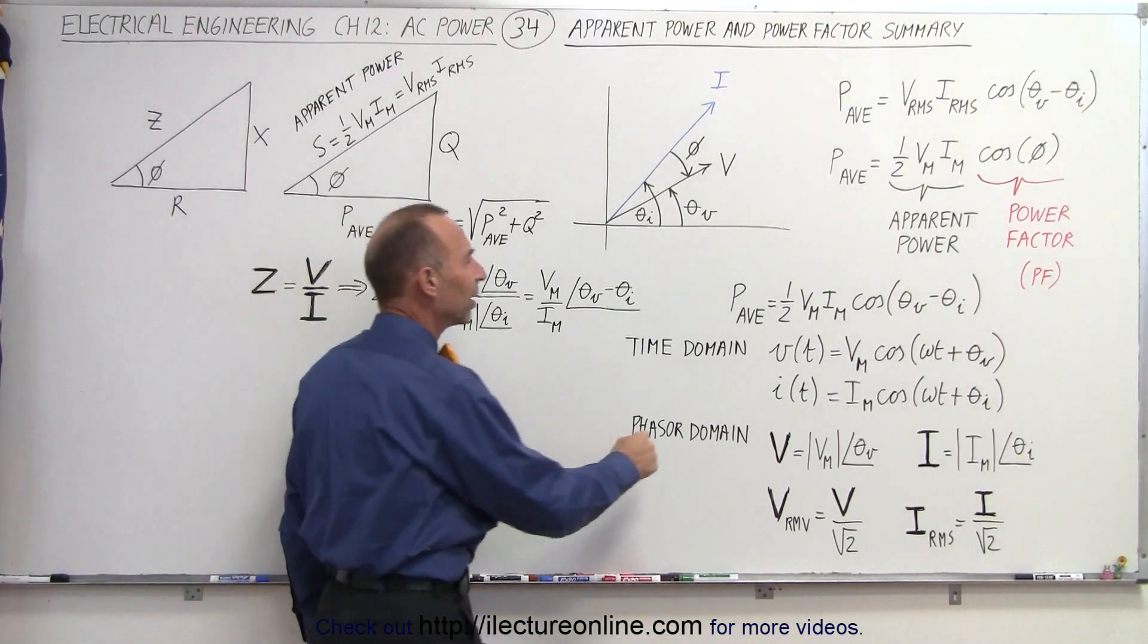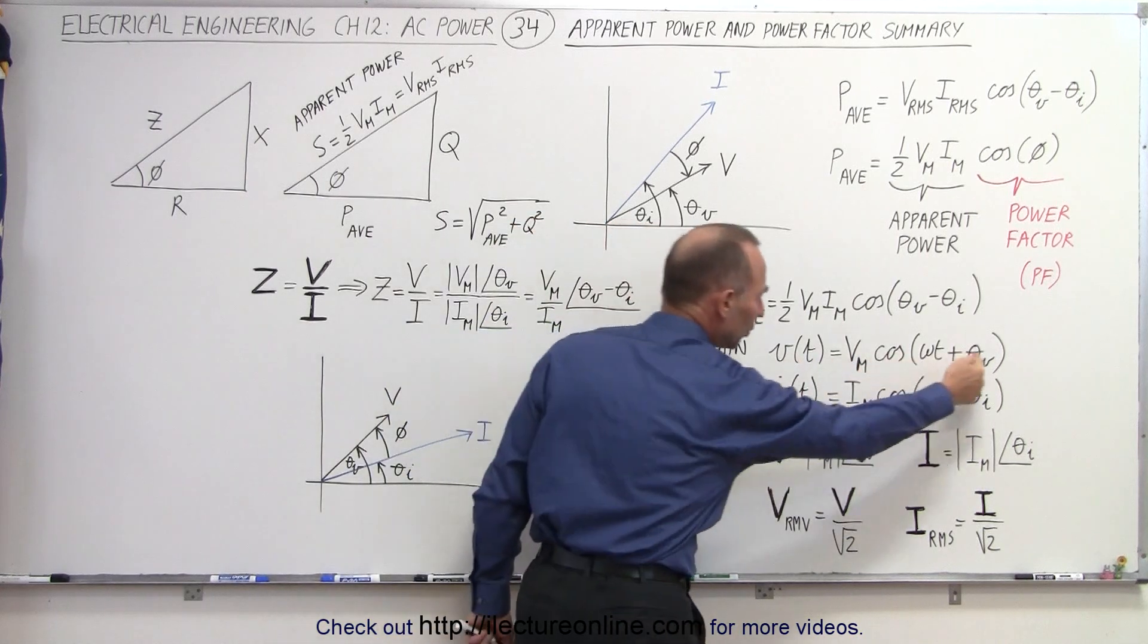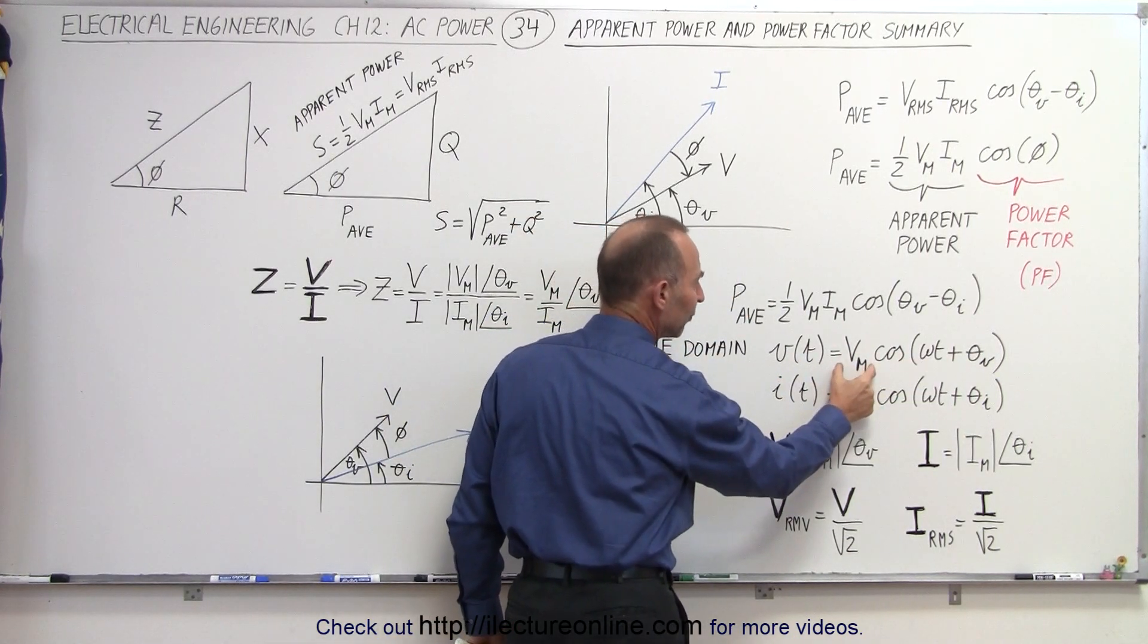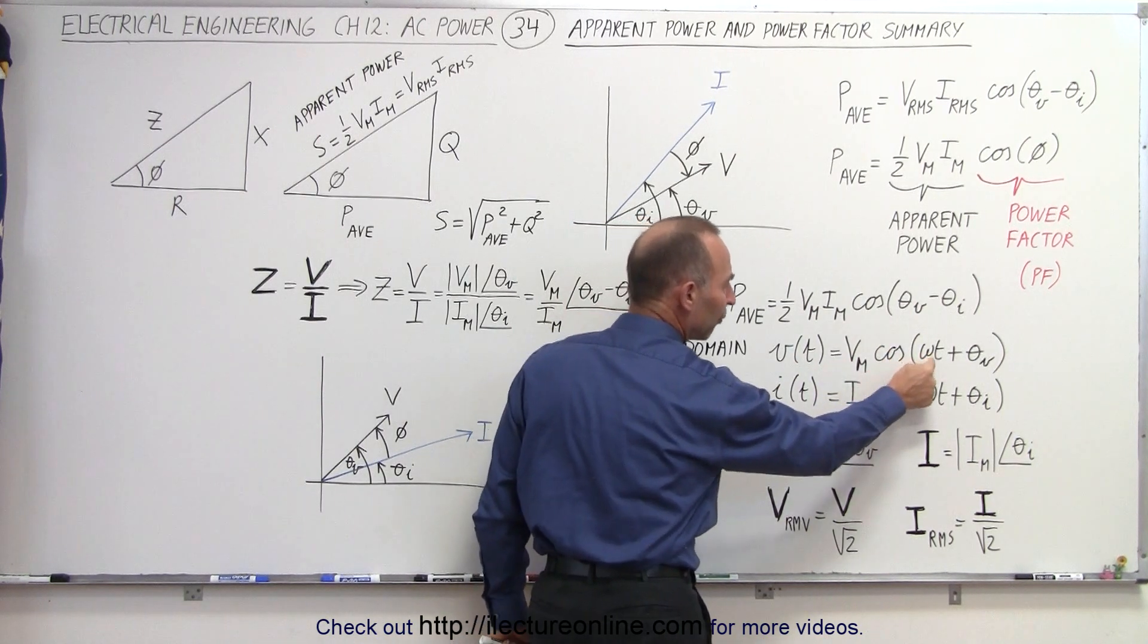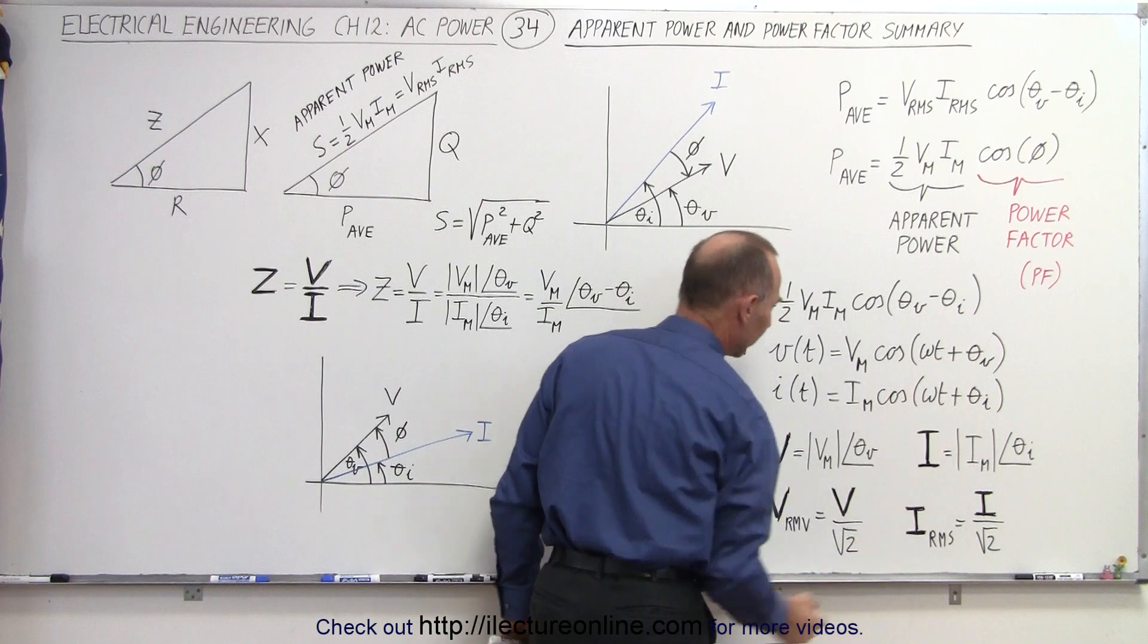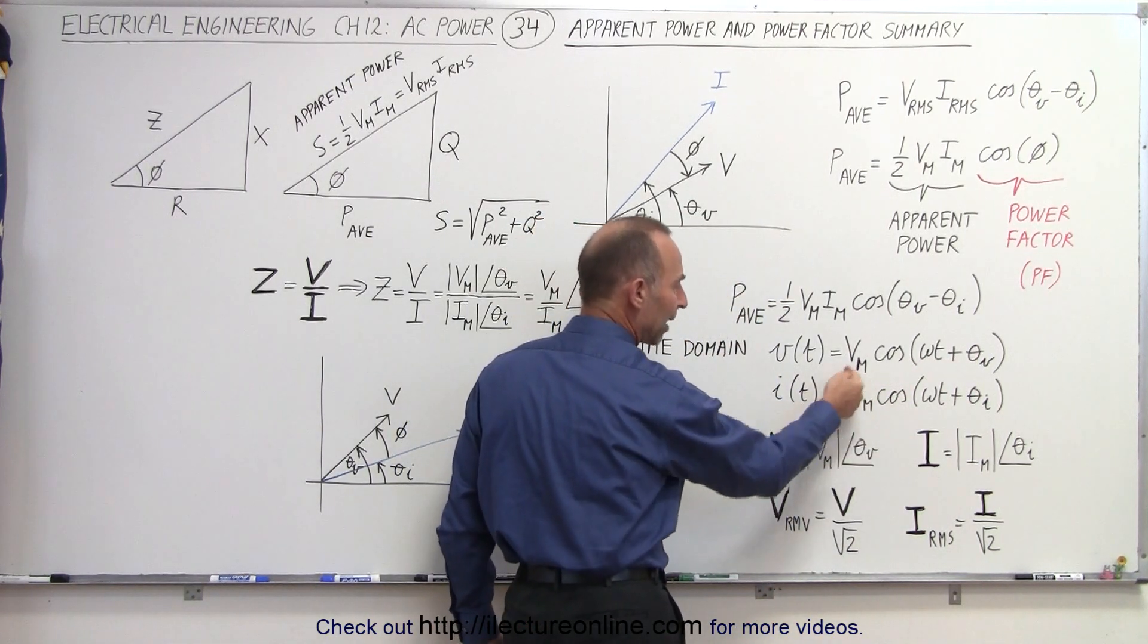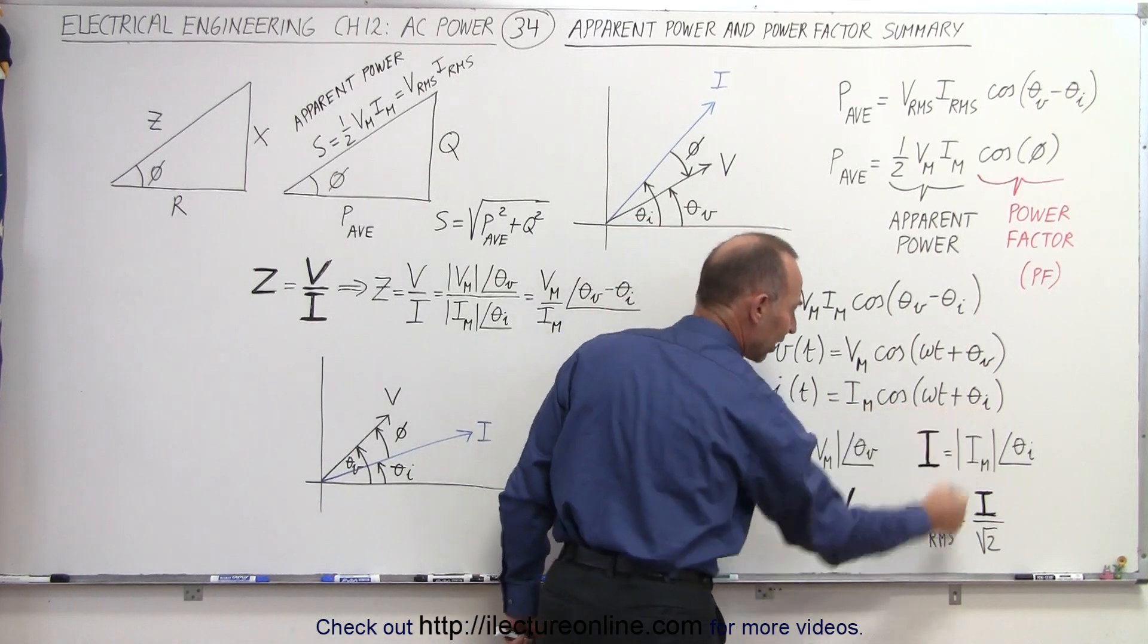Well, first of all, we need to realize that the voltage and the current can be expressed in the time domain according to these two equations. The voltage as a function of time is equal to the maximum voltage times some sinusoidal function, typically the cosine of omega t plus a phase angle. And the current as a function of time also can be expressed as the maximum current in the circuit times the cosine of omega t plus the phase angle of the current.